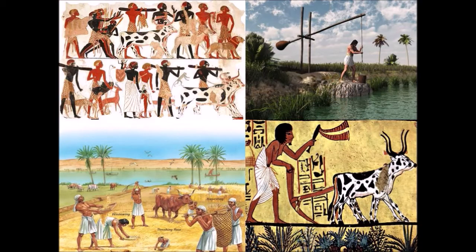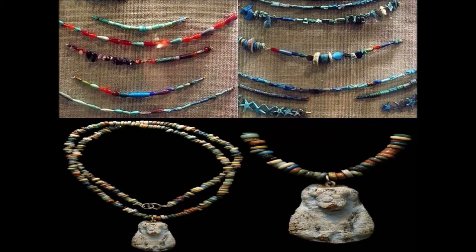They imported gold, silver, ivory, etc. They had pet animals such as dogs, cats, and monkeys. They had trade relations with Palestine and Syria.